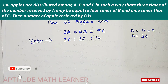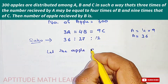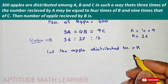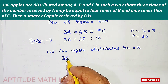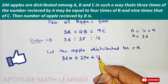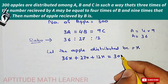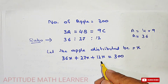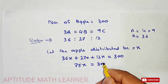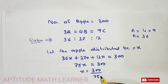Let the apples distributed be x. So we have 36x for A, plus 27x for B, plus 12x for C, and the total apples is 300. Adding all these together, we get 75x equals 300.